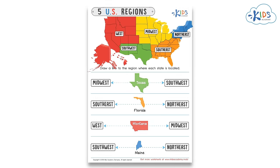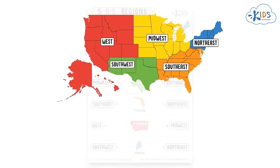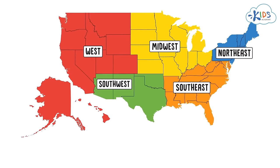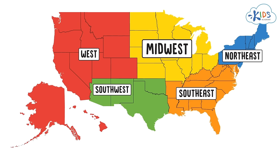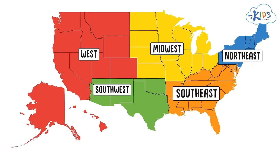There are 50 states in the United States of America. The U.S. is divided into five regions: West, Midwest, Southwest, Northeast, and Southeast.